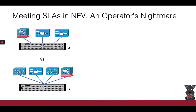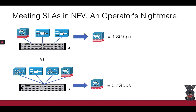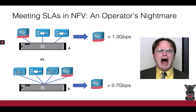Dwight tries both options before deciding where to spawn the firewall. On server A, he sees that the firewall can process 1.3 Gbps of traffic with no problem. On server B, however, despite having followed standard NFV deployment assumptions, he sees that his firewall can only process 0.7 Gbps of traffic, which is almost 50% lower than running it on server A. Dwight is extremely confused.